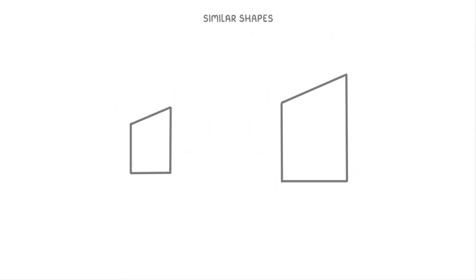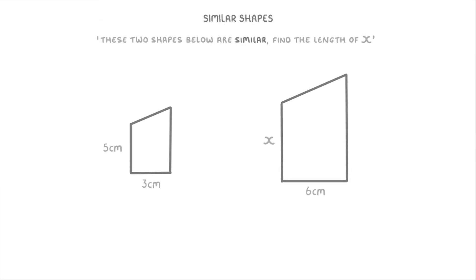When it comes to exams, they'll normally just tell you that the two shapes are similar and instead ask you to work out an unknown side on one of the shapes. For example, if we look at this question here, we're told that these two shapes are similar and we're being asked to find a missing side length x.